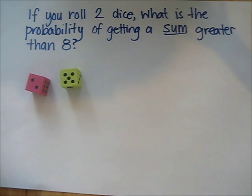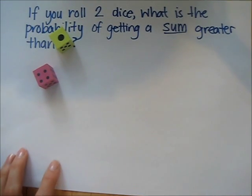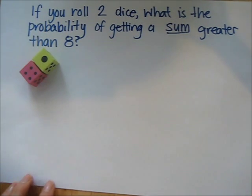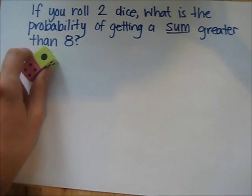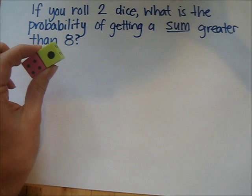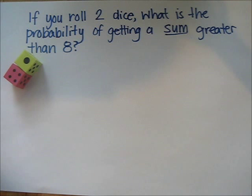In this next example, we're going to look at what happens when you roll two dice. Lots of board games like Monopoly depend on rolling two dice — you add the scores together and that's how many spaces you move. So let's look at the probability of getting a sum that is greater than eight. The first thing we need to do is work out all the different possible sums and the different ways to get them, using a sample space diagram.